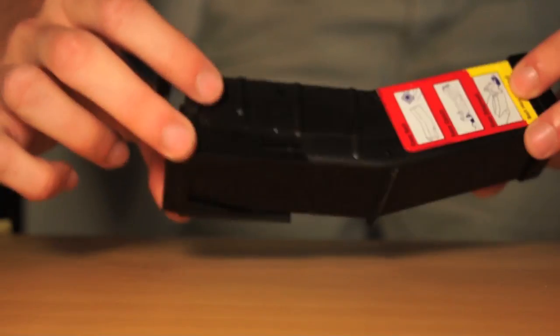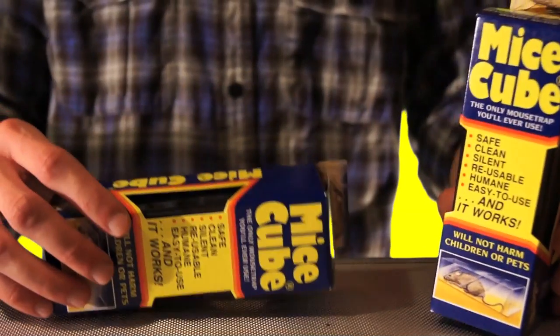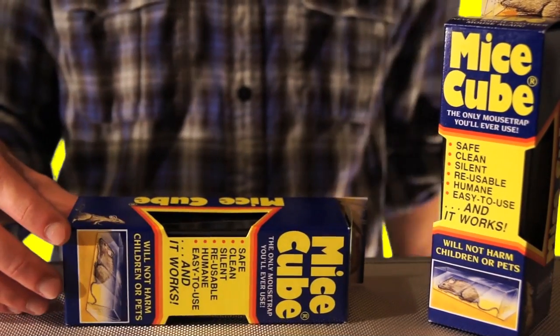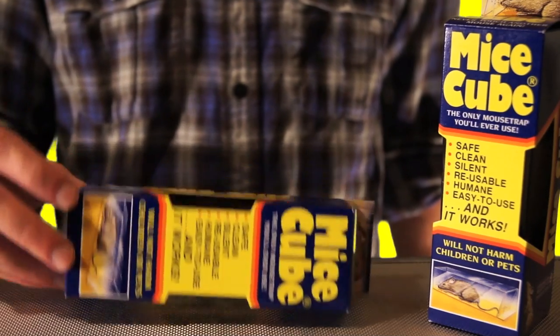I have however since then found a trap that I think we're gonna test now, but I think it may be even better than the nest tip trap, and that is the mice cube, which seems like really bad English actually, but I don't name these things. All I know is it looks really cool.